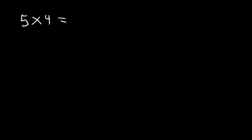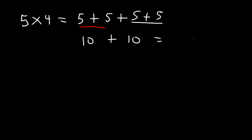Let's talk about multiplication. If you want to multiply 5 times 4, what's the answer? Now perhaps you know the answer by memorization. When you think of multiplication, think of repeated addition. 5 times 4 means that you're adding 5 four times. 5 plus 5 is 10, and these two 5s add up to 10. 10 plus 10 is 20. So that's multiplication — it's just repeated addition.